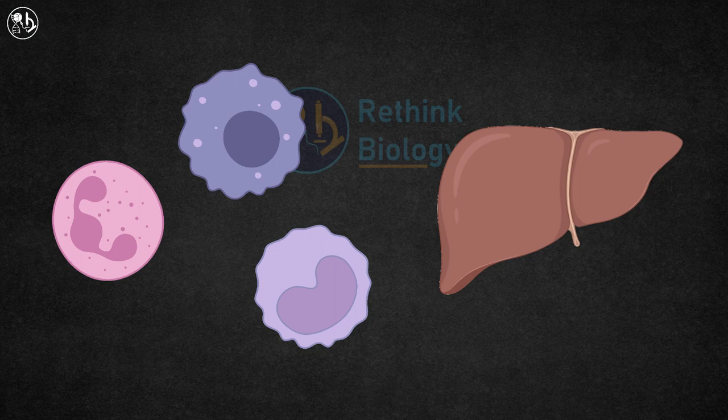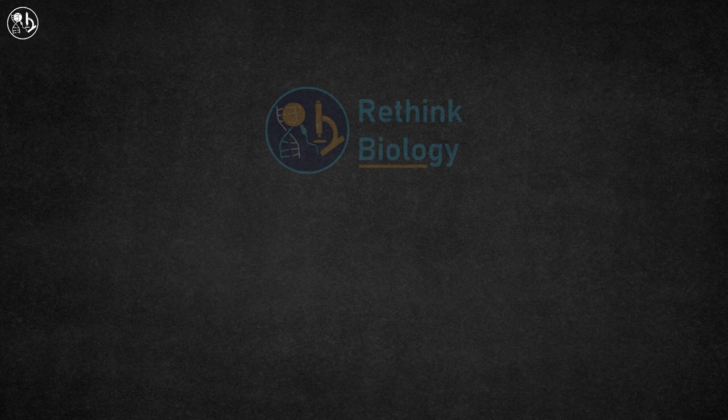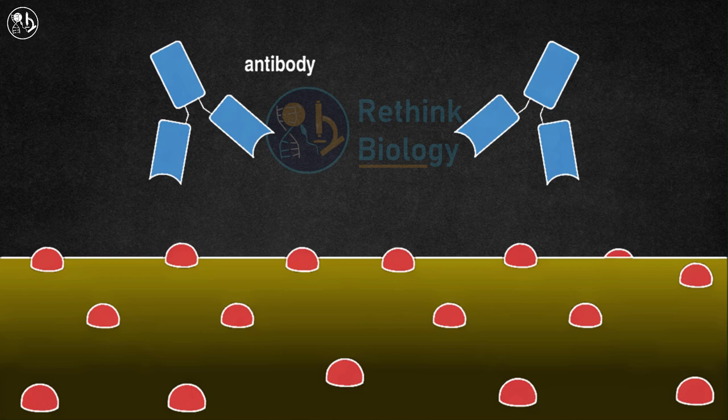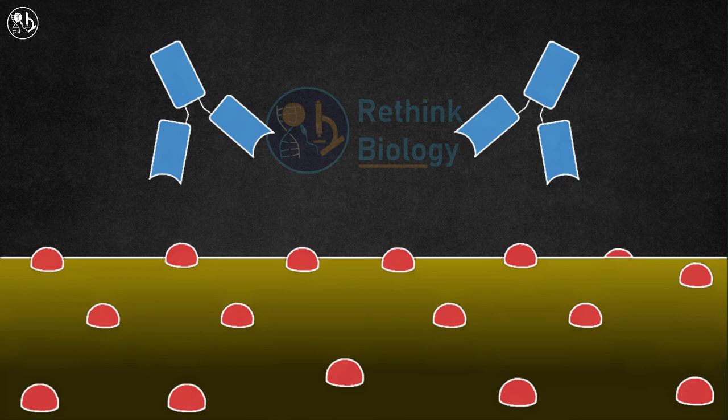These proteins circulate inactively in the absence of infection. The complement system becomes activated in the presence of infection or antibodies linked to pathogens. It gets activated on surfaces such as the surface of a bacterium as shown here. In this case, antibodies that attach to the bacterial cell surface antigens activate the complement system.